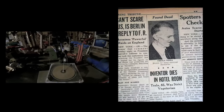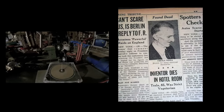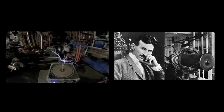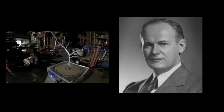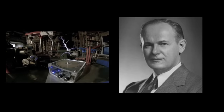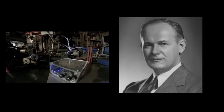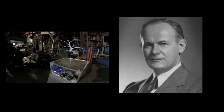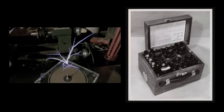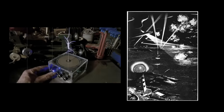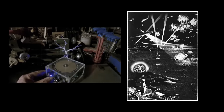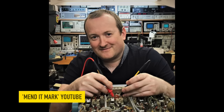He owed the hotel a considerable sum of money for rent, and had promised them a special secret device held in his room safe. The safe was opened by John G. Trump, a professor at MIT. What he found inside was surprising — a Wheatstone Bridge. Is the Wheatstone Bridge related to Tesla's death ray? I have no idea, but I know a man who does: Mendit Mark. He kindly offered to explain to us all what exactly a Wheatstone Bridge is.